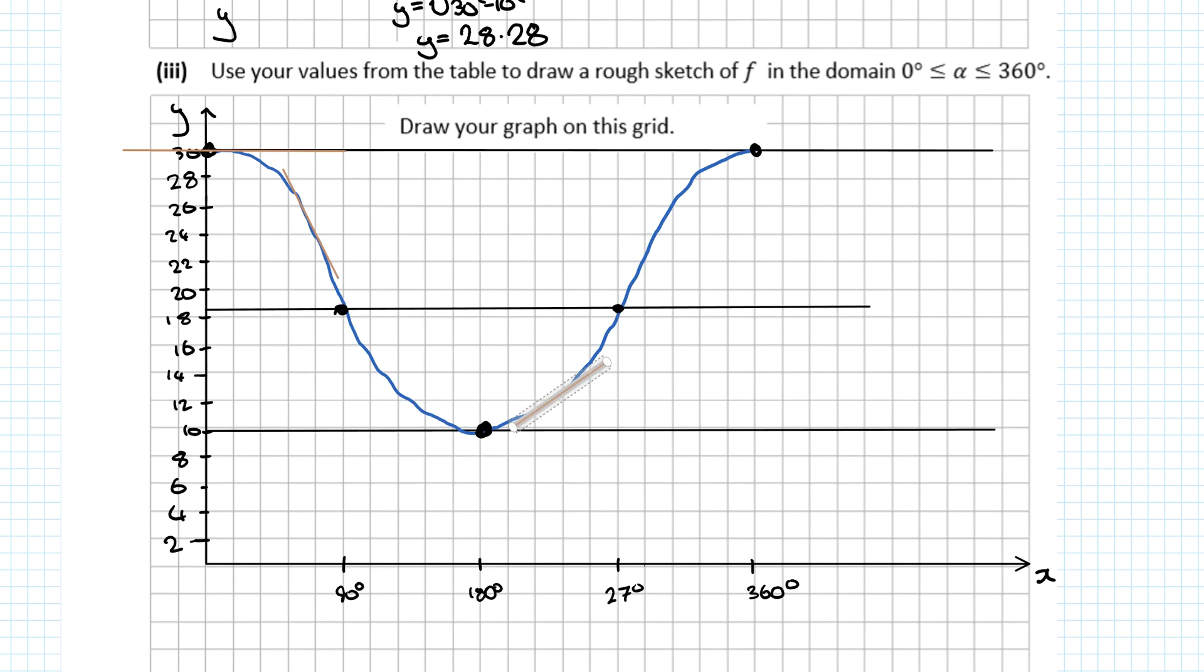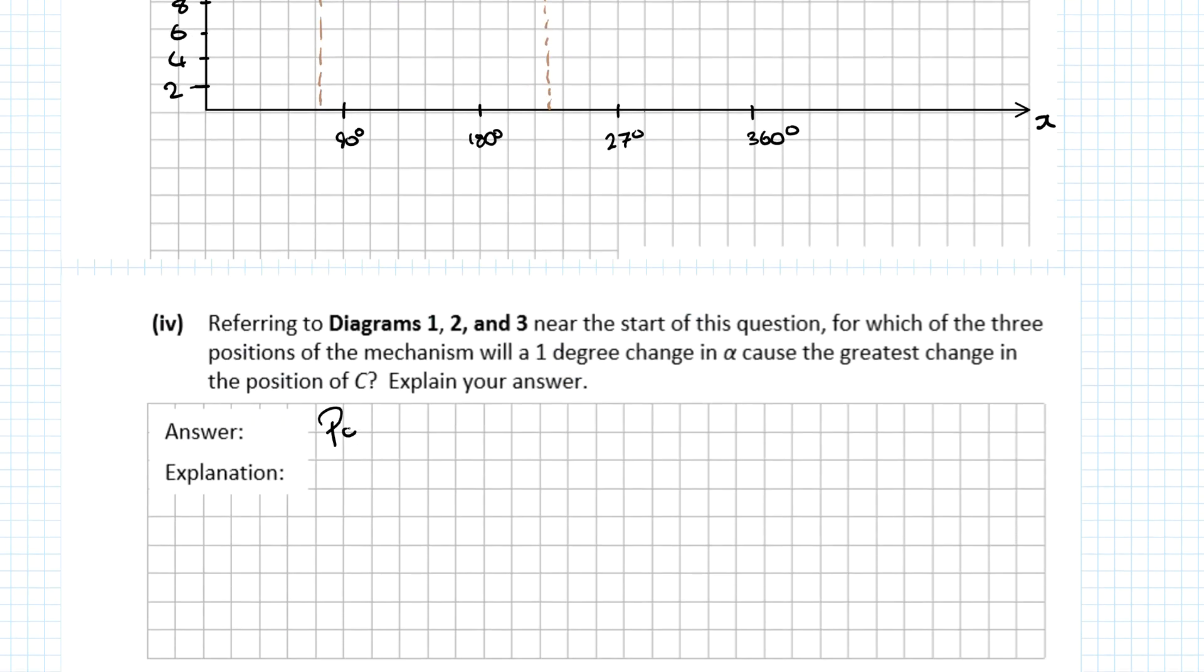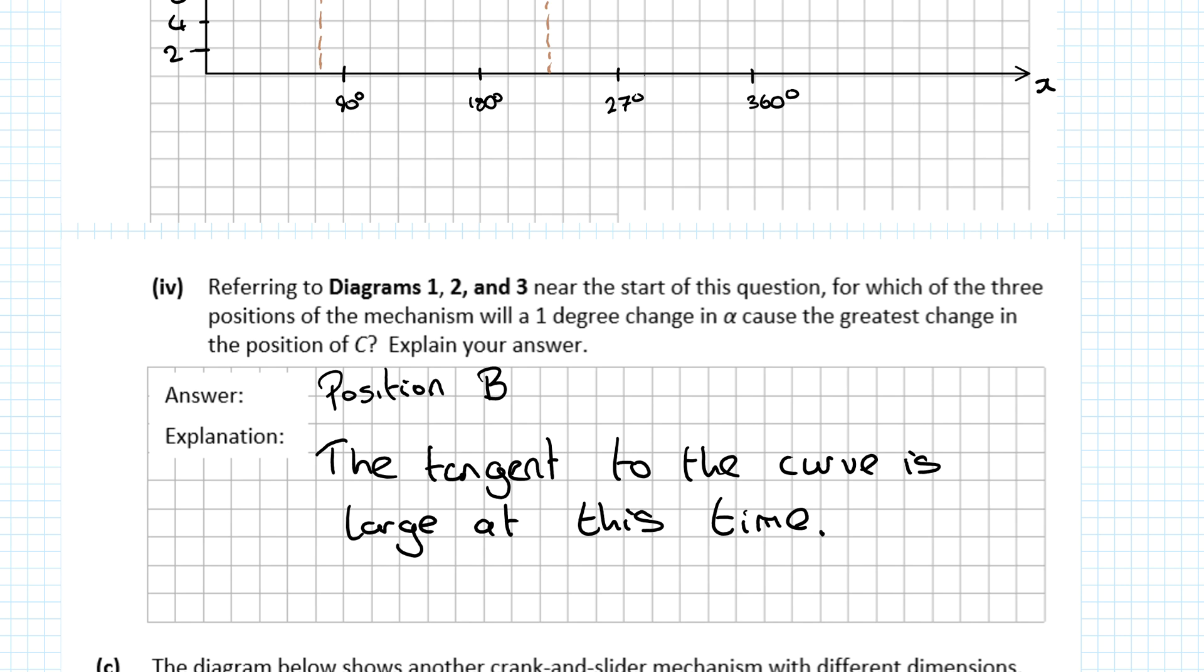The slopes at these positions: 70° is somewhere around there. The change in 1° is much greater here because the slope is steeper. You're looking at position B. The tangent to the curve is large at this point. You're making reference to the tangent to the curve.